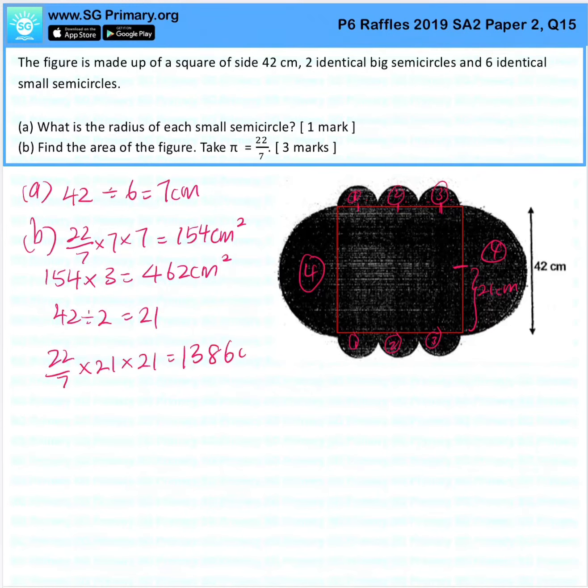The area of the square is 42 times 42, 1764 cm². So now we have all of these areas. We just have to add them up.